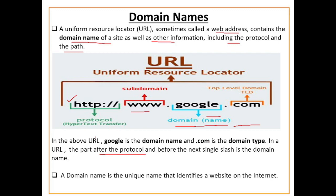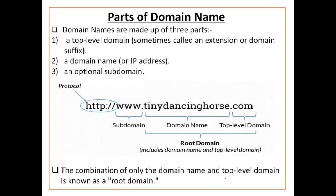In a URL, the part after the protocol and before the next single slash is the domain name. Domain name is the unique name that identifies a website on the internet. Domain name एक unique name है जो एक website को internet पर identify करने में help करता है।